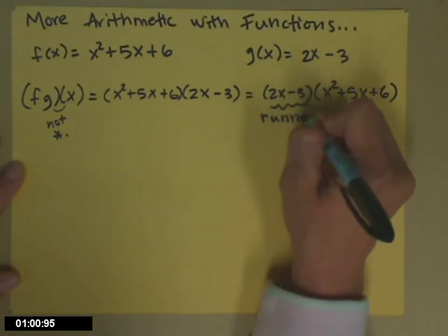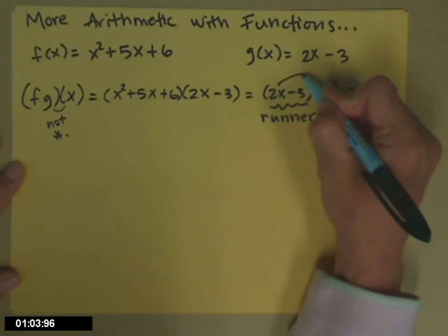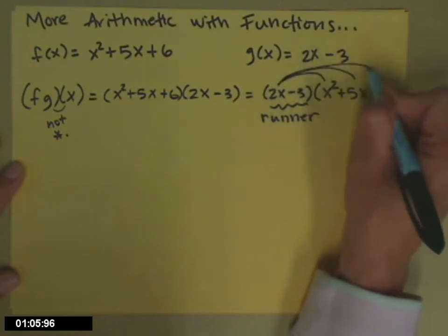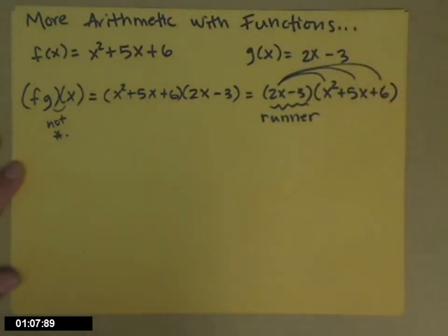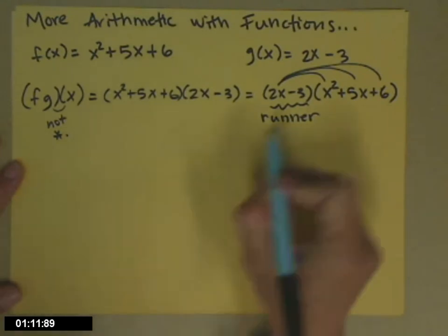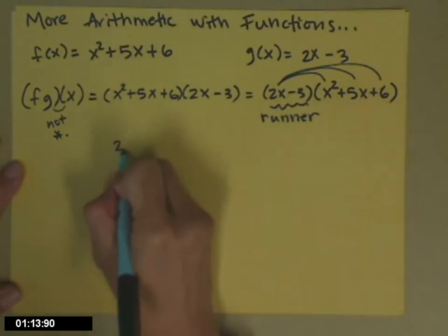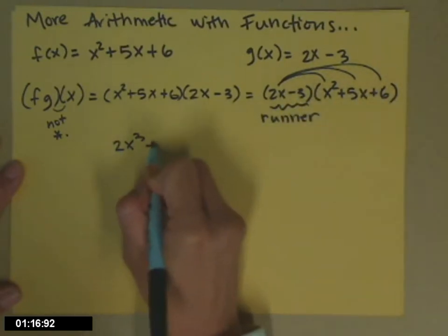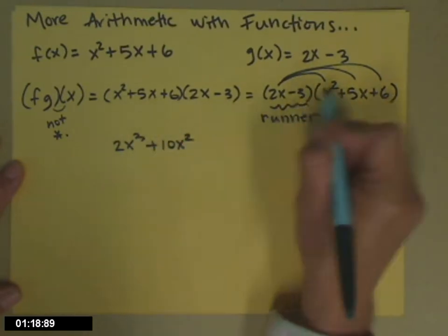What I'm going to do is take each piece of the binomial and run it through the second one, and running distributes. So 2x times x squared for 2x cubed, 2x times 5x, 2x times 6.